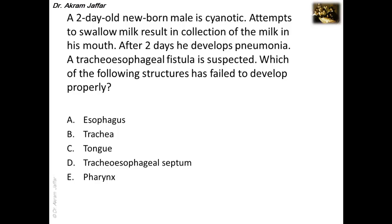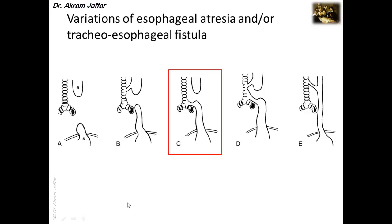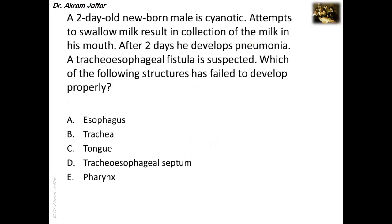Atresia means complete closure of a tube. There are different types and variations of the tracheoesophageal fistula with or without atresia. The first type is atresia on both ends of the esophagus. The commonest type has a fistula with atresia distally — the esophagus ends blindly, with atresia of the proximal part and the distal part connected to the trachea via a tracheoesophageal fistula. This commonest type is likely the one present in the patient shown in the question.